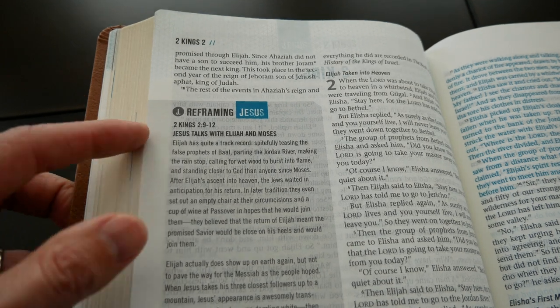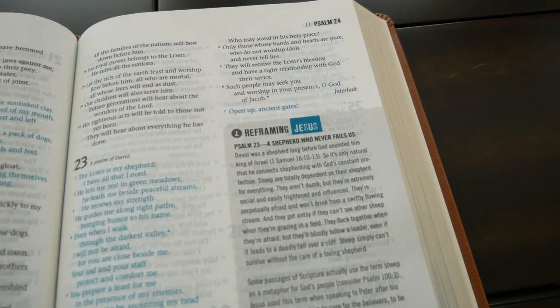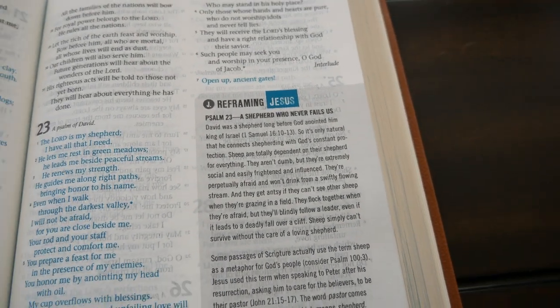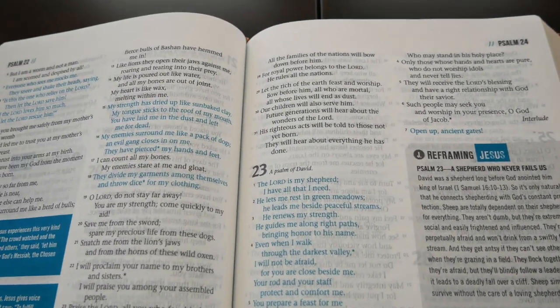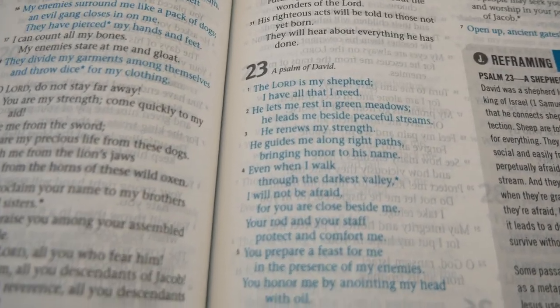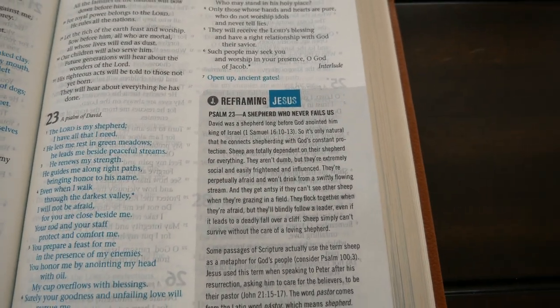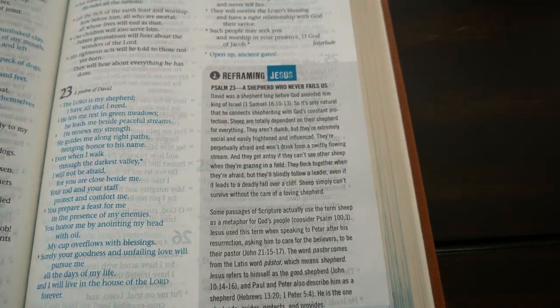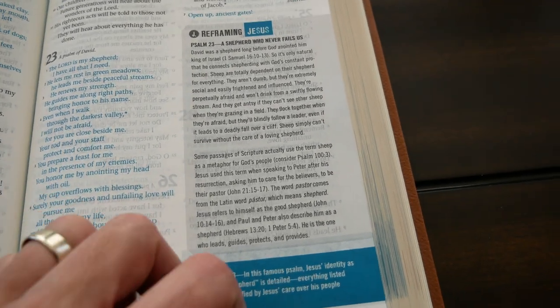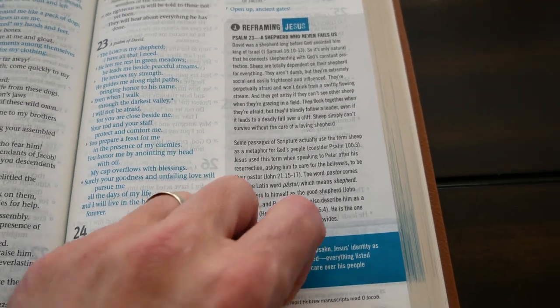So, in 2 Kings 2, you have the story of Elijah taken into heaven. And then they will tell you about the passage when Jesus talked to Elijah and Moses. You have another one here, like in Psalm 23, a shepherd who never fails us. So, you have the whole Psalm 23 actually in blue letter. I wouldn't call this a blue, but more like a teal. And then you have a little box here saying reframing Jesus. And they will tell you that, you know, David was a shepherd and all that. And how you can connect that to Jesus, the good shepherd.